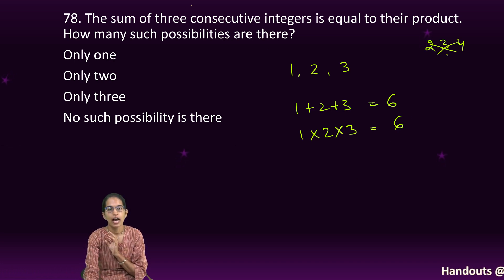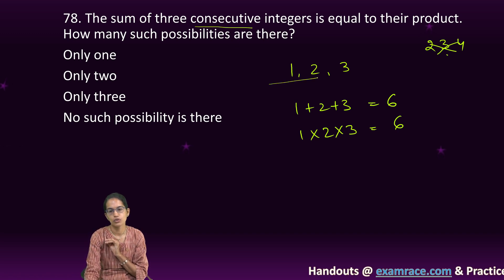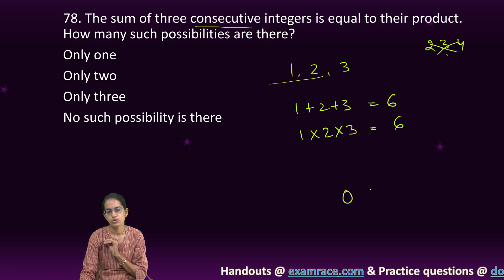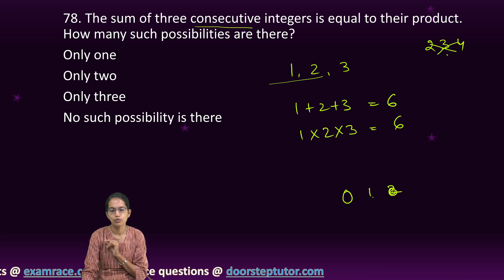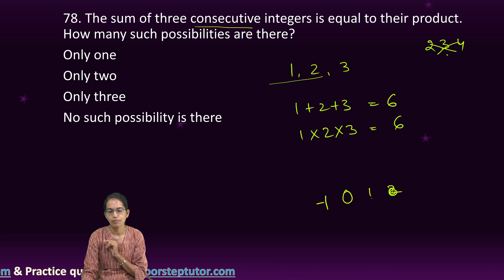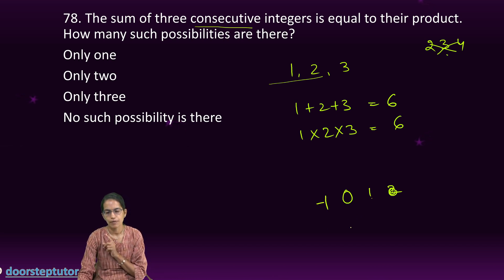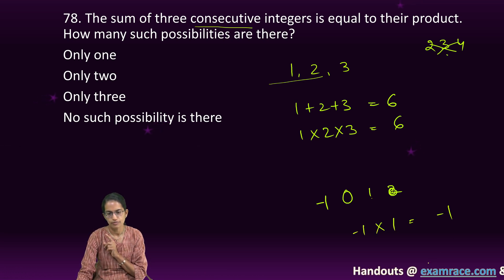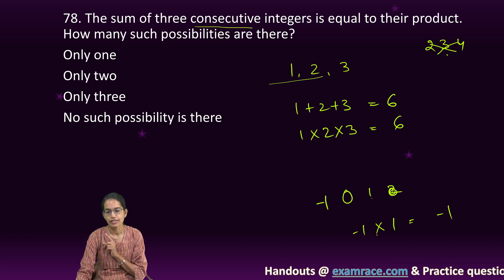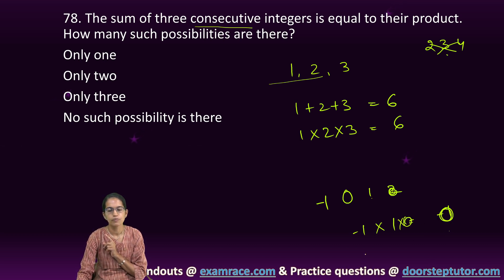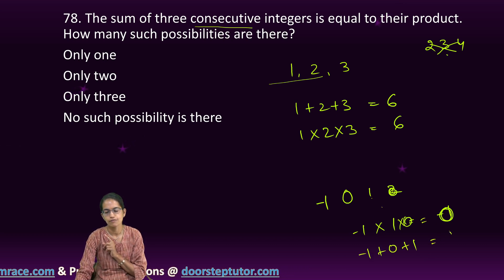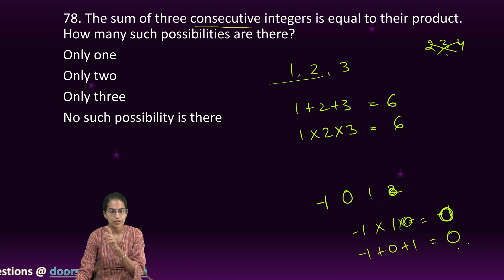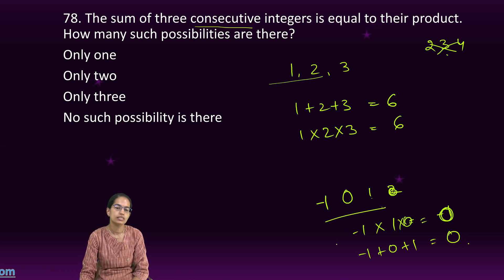Let me try 0, 1, 2. That doesn't match. Let me try 0, 1 and minus 1. When I multiply, minus 1 into 1 into 0 gives me 0. The addition: minus 1 plus 0 plus 1 again gives me 0. So my sum and product remain the same. Another combination is minus 1, 0, and 1.